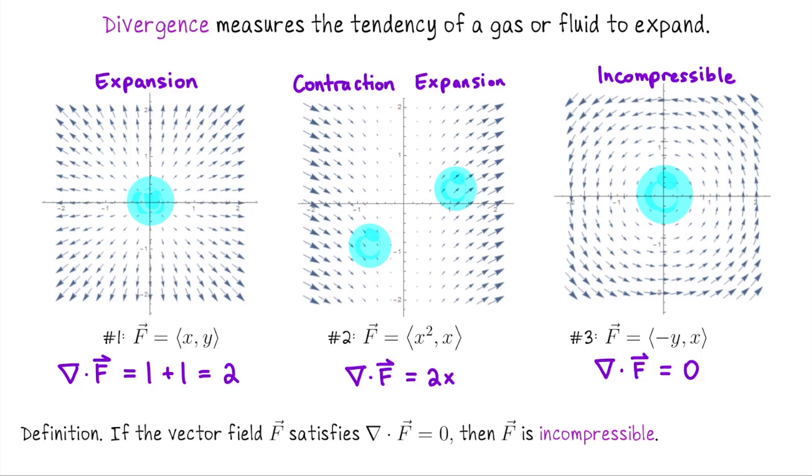These pictures are in R2, but you can imagine it's the same behavior in R3. So divergence, unlike curl, makes sense equally both in R2 and R3.